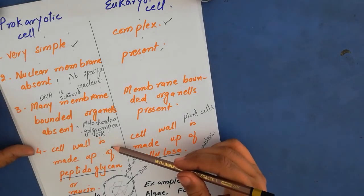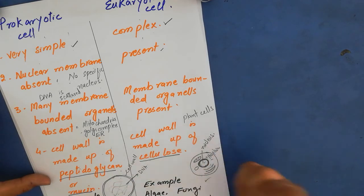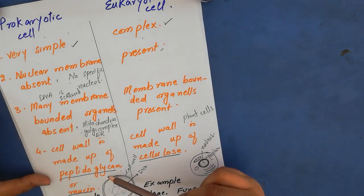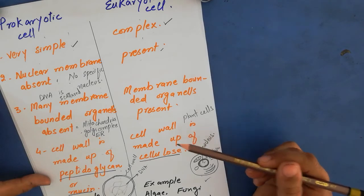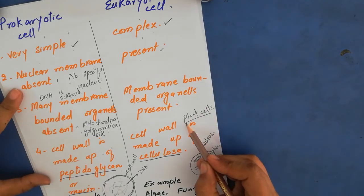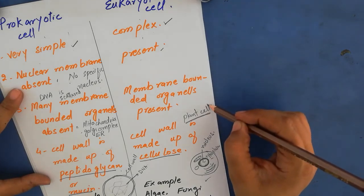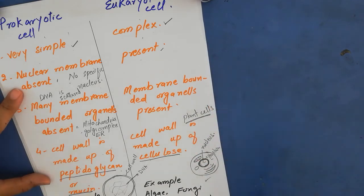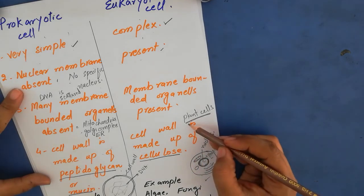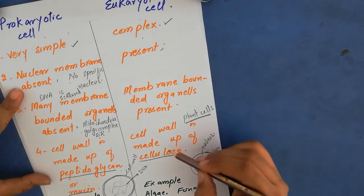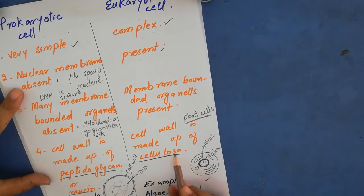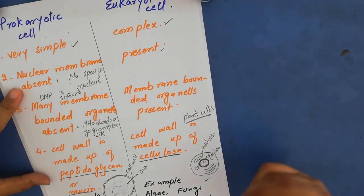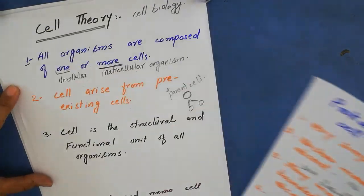Cell wall is present in prokaryotic cells but is made up of peptidoglycan or mucin, not cellulose. In eukaryotic cells, cell wall is present only in plant cells — animal cells don't have a cell wall, only a cell membrane. When cell wall is present in plant cells, it is made up of cellulose. Examples of eukaryotic cells include algae, fungi, plants, and animals.